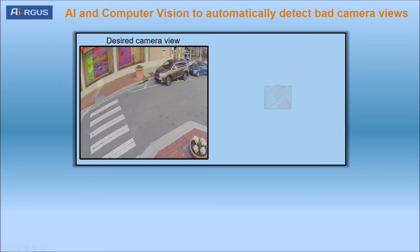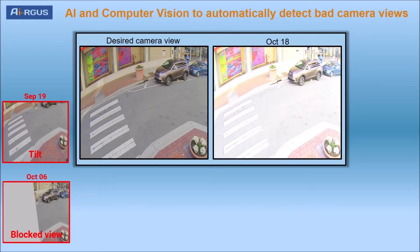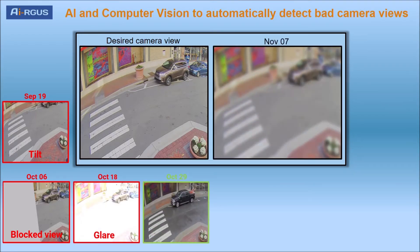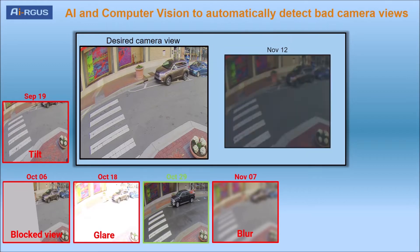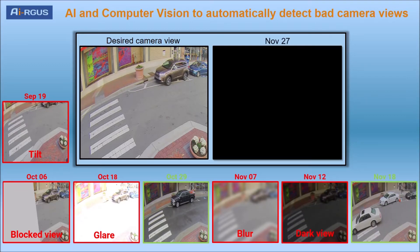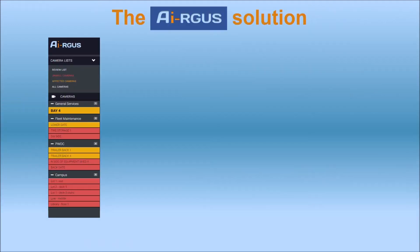Argus provides an automated solution that finds unclear and unusable camera views. Argus uses artificial intelligence and computer vision to automatically compare the current camera view against an image of the desired view for that camera. Argus automatically alerts if the view is tilted, blocked, has glare, blur, low light, or the feed is down. With Argus, you can be sure that your camera will provide the images you need when you need them the most.